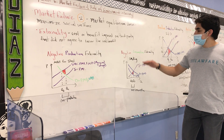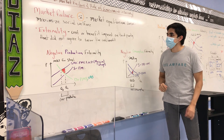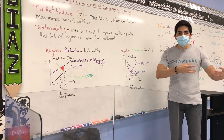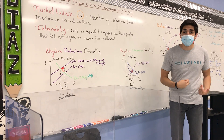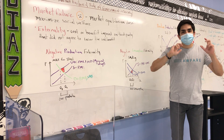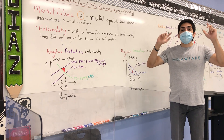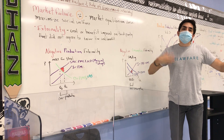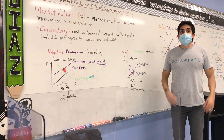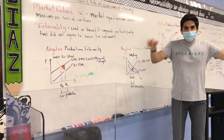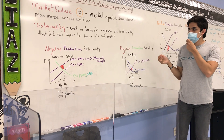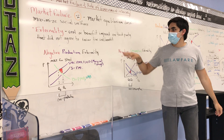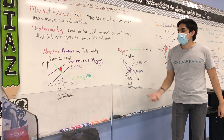An externality reflects a situation in which the cost or benefit of a market transaction isn't just internalized by the parties, but it's actually absorbed and felt by other people external to the transaction that didn't consent to it. It's externalized — that's where the term externality comes from. So it's a cost or benefit imposed on a third party that did not agree to incur the cost or the benefit.